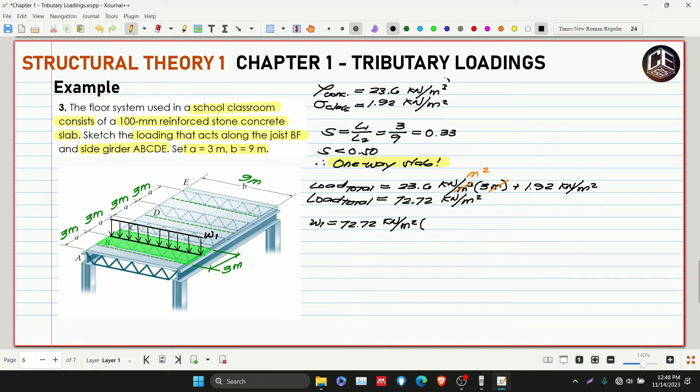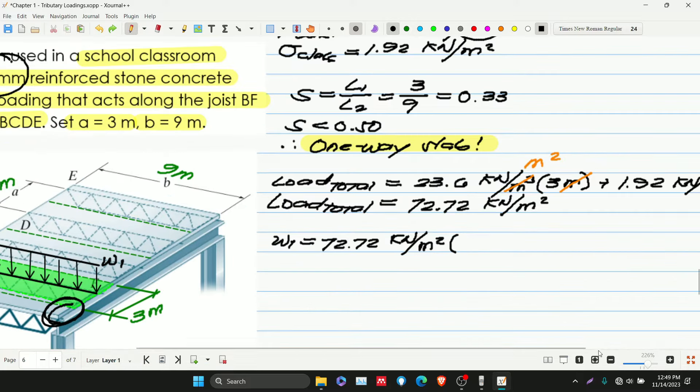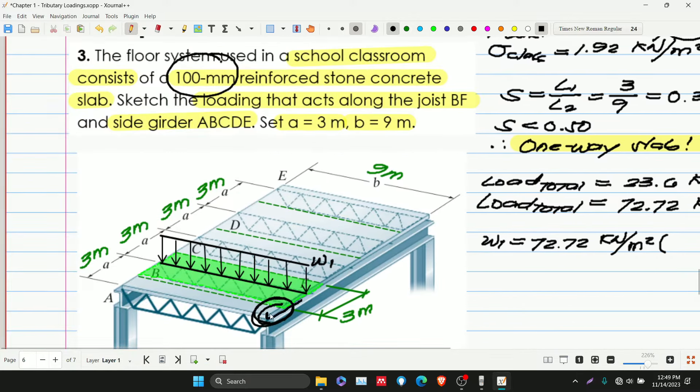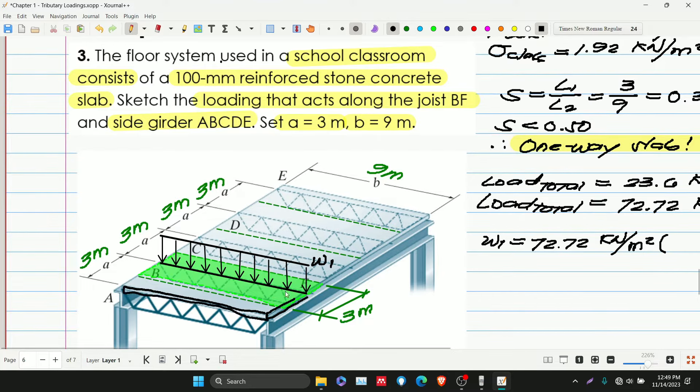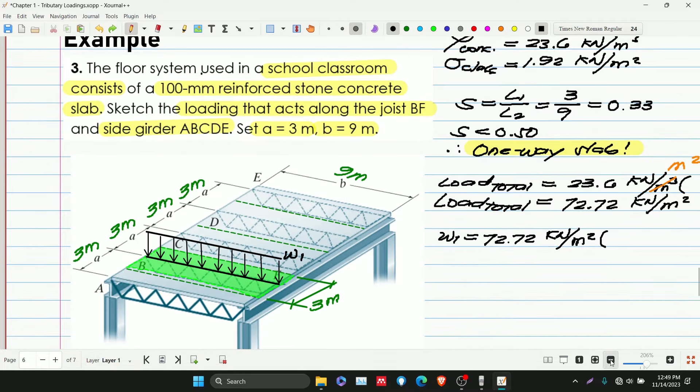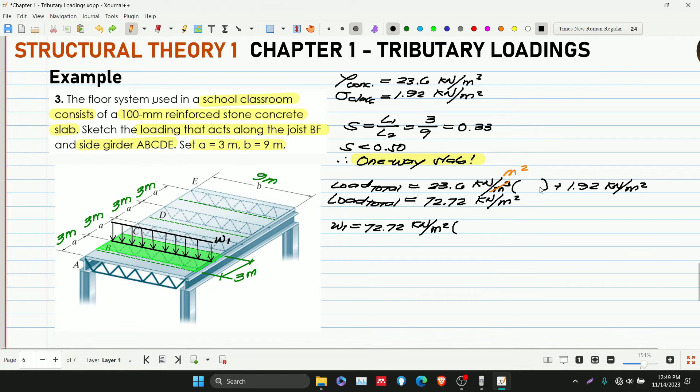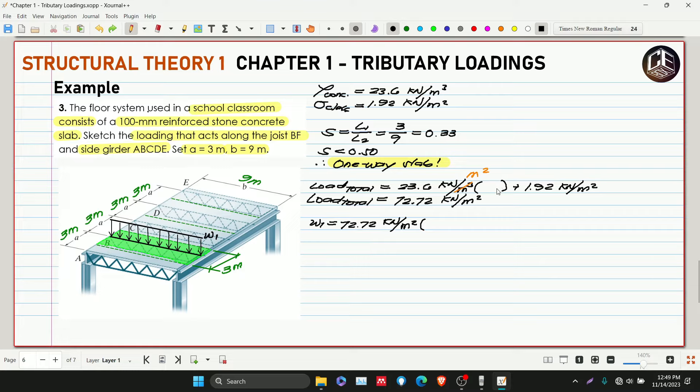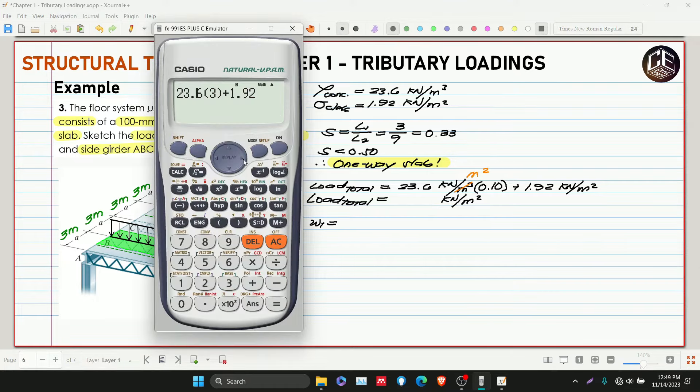We're focused on volume. We need to multiply our concrete load by the 100mm thickness. The thickness, length, and width - the width is 9 meters, the length is this, and we need to distribute it as kilonewton per meter squared over this area. We need to multiply by the thickness. So the thickness is 0.10 meters.